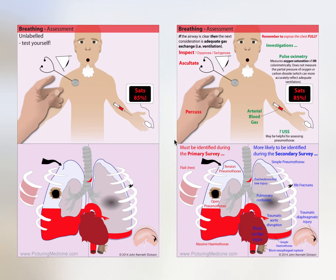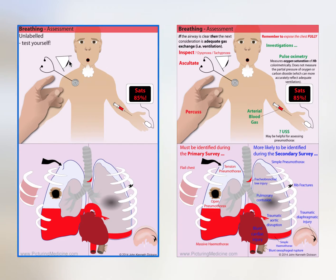When assessing breathing in a trauma situation, keep it simple: look, listen, and then percuss. You might want to consider using SATS monitoring and maybe an ABG, maybe even an ultrasound to assess for pneumothorax.